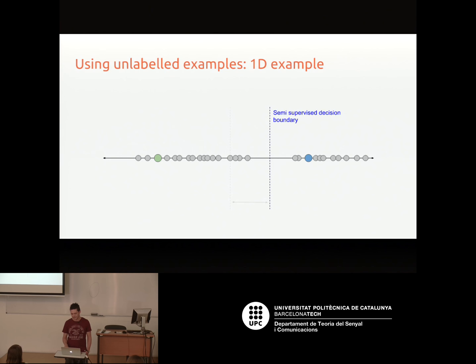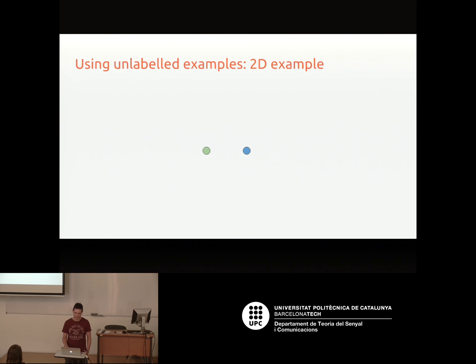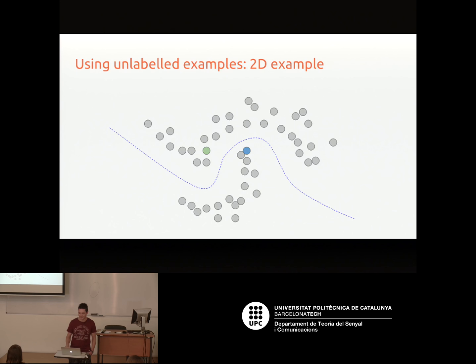In 2D you can make a similar argument. If you only had these two points, your boundary might be one thing, but if shown these unlabeled points instead, you'd probably draw something quite different. So the idea is that even if we want to do a supervised task and write a discriminative classifier, having unlabeled examples should be able to help us.